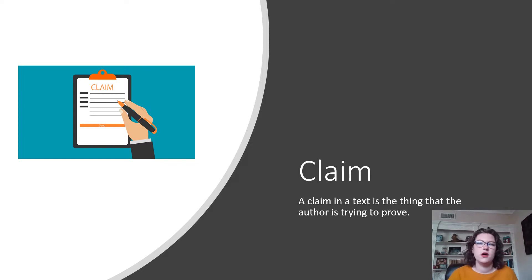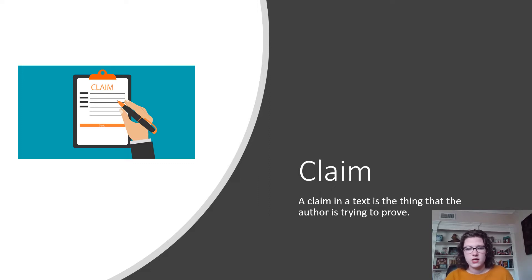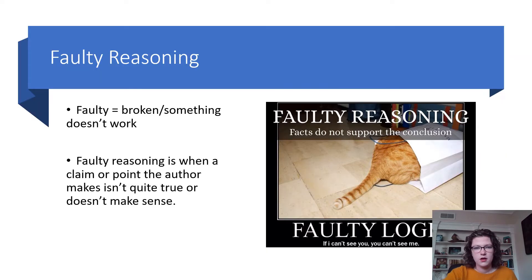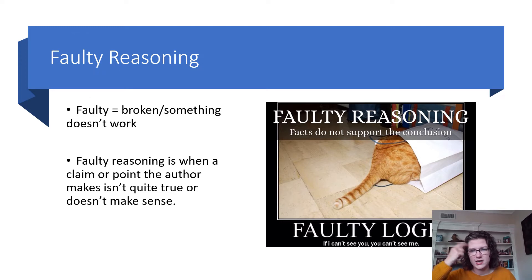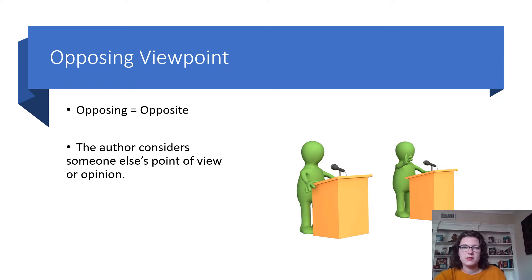We'll go over a few words needed for our persuasive text — and we'll go over these again tomorrow since you'll need them for both articles we're reading. The claim is the thing the author is trying to prove. Faulty reasoning is when a claim doesn't quite make sense — like a cat hiding in a bag thinking if it can't see you, you can't see it. The cat has faulty reasoning. And opposing viewpoints: opposing means opposite, so an opposing viewpoint is when the author considers someone else's point of view or opinion.